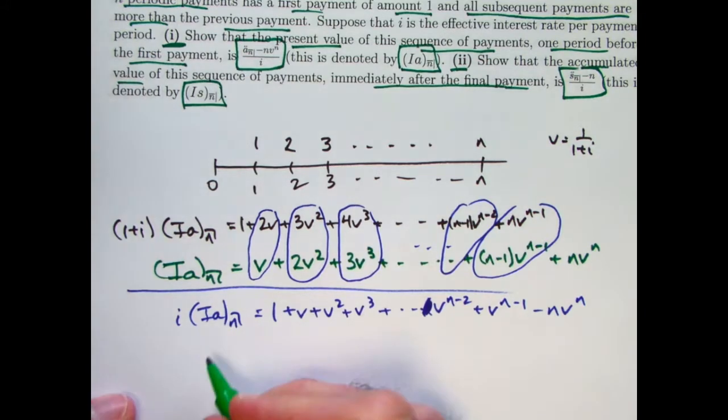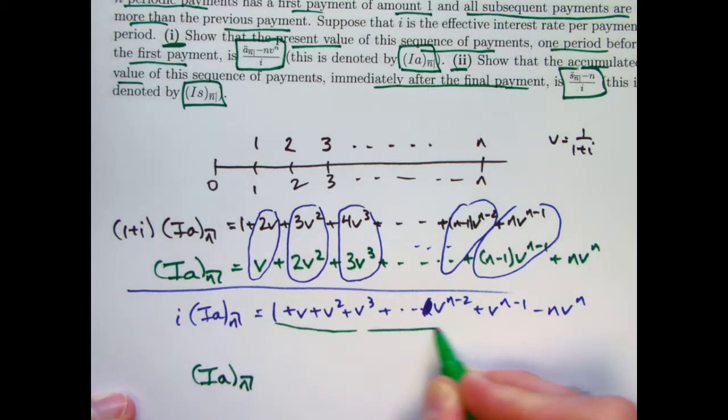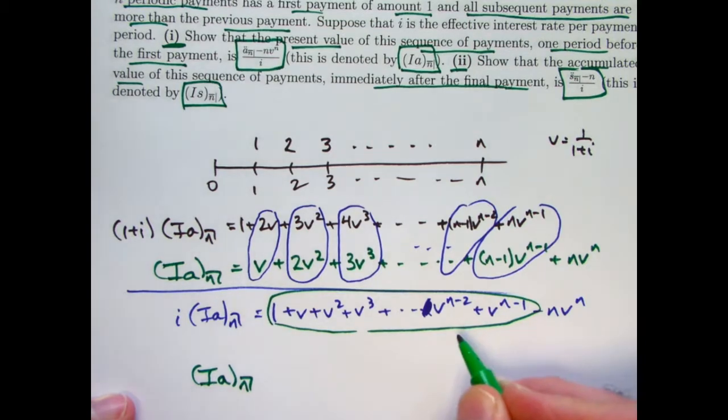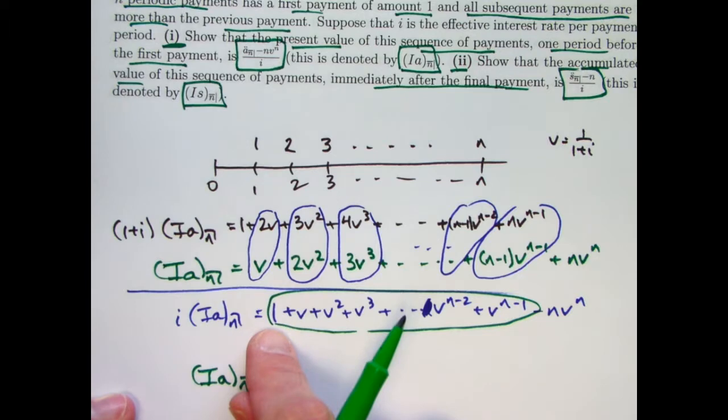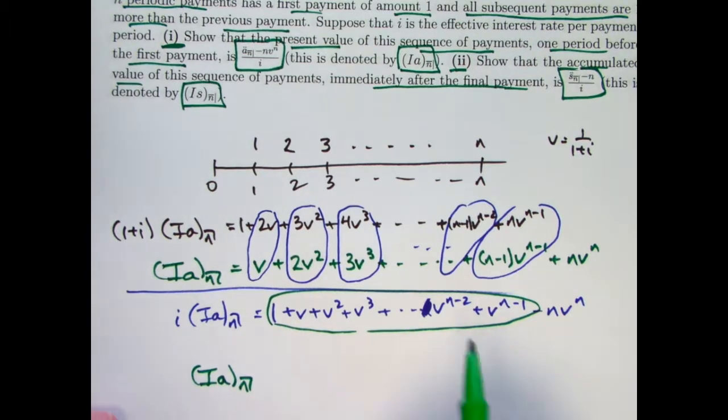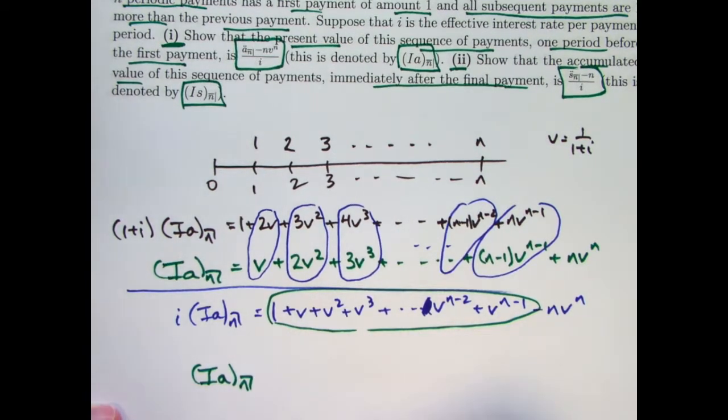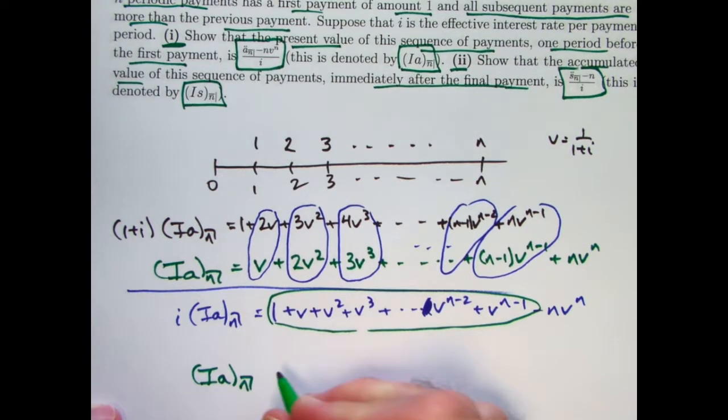Divide both sides by i. This thing right here is the same as a_n double dot.